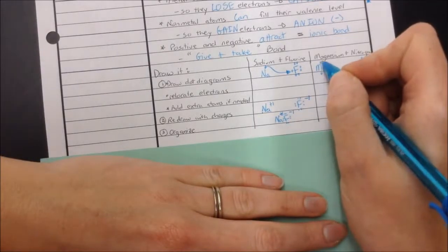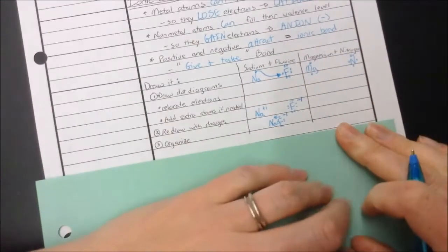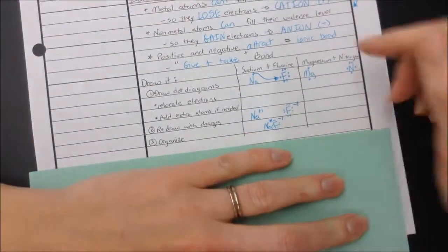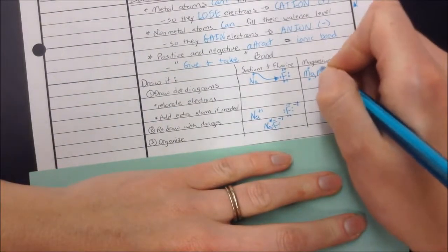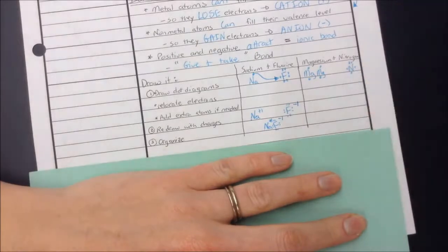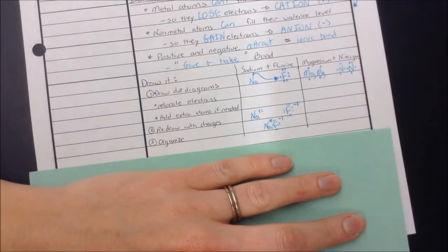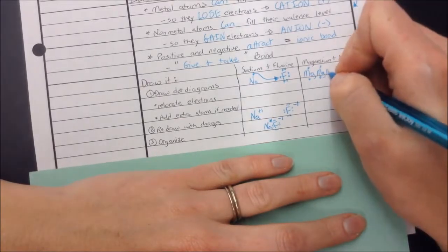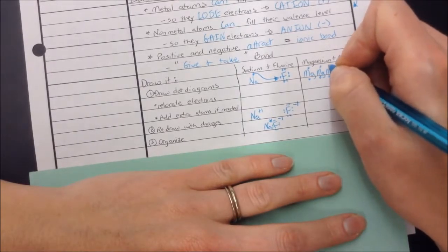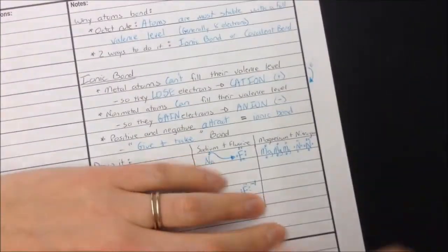So magnesium says it has two to get rid of, but nitrogen only needs three, so we're going to need another magnesium. And so now we have four electrons to get rid of, but nitrogen can only take three, so let's add another nitrogen. And then we're going to need another magnesium here. Maybe I should have added more room.